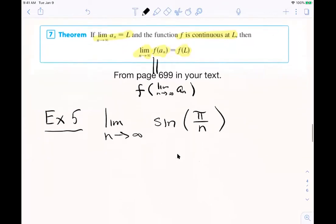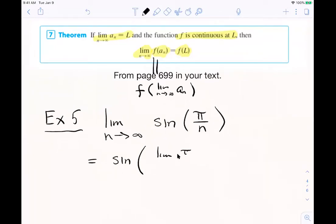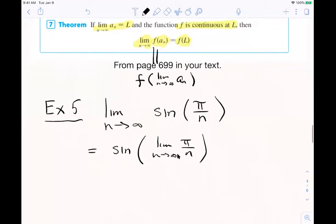So here I've got an example five set up for it. I've got the limit as N goes to infinity of sine of pi over N. Sine is a continuous function. So that theorem up there says that I can take the limit of pi over N as N goes to infinity first, then take the sine of that. Well, the limit as N goes to infinity of pi over N is zero. And the sine of zero is zero. So that's a handy theorem. We just use theorem seven to calculate the limit of the sine. So you can do that for any continuous function.